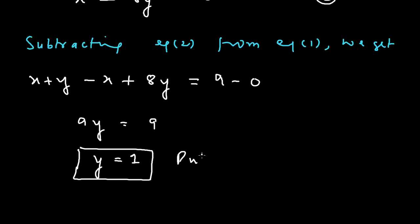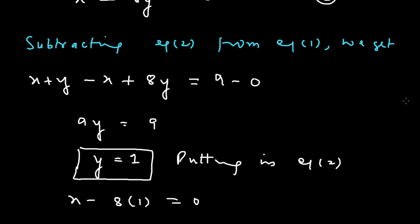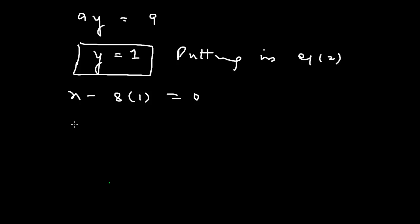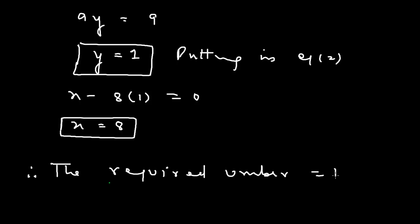We substitute y = 1 into equation number 2: x − 8(1) = 0, so x = 8. Therefore, the required 2-digit number is 18. This is the solution of the question. Thank you.